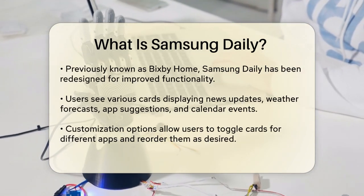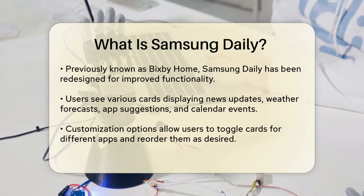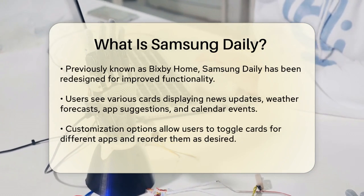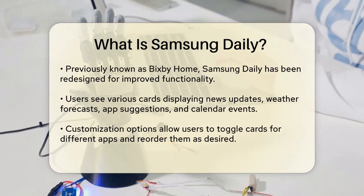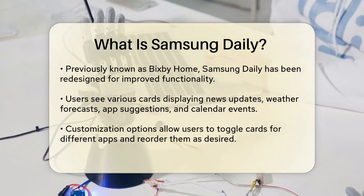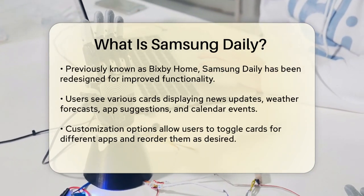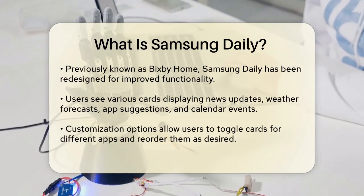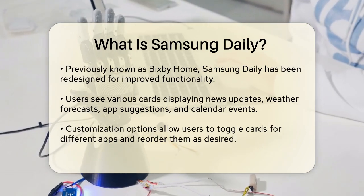You can customize these cards to show exactly what you want to see. For instance, you can toggle on or off the different apps you want to see cards for, and even reorder them to suit your preference.